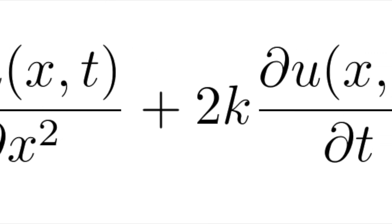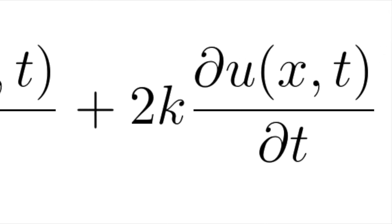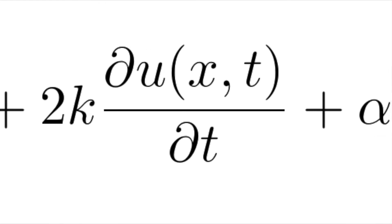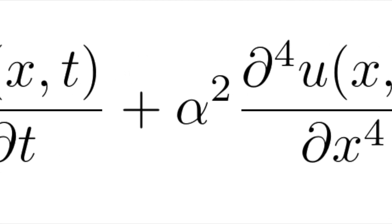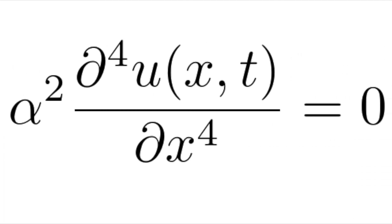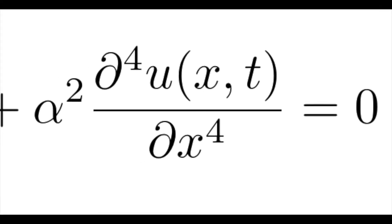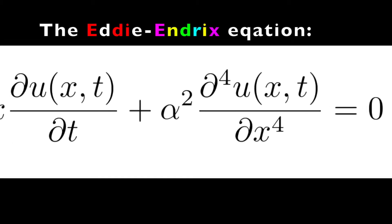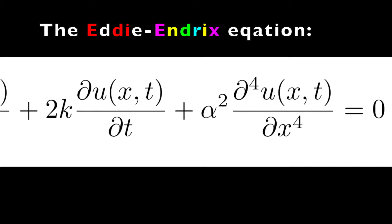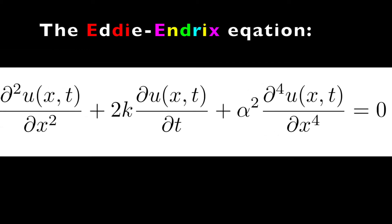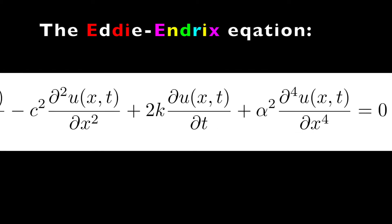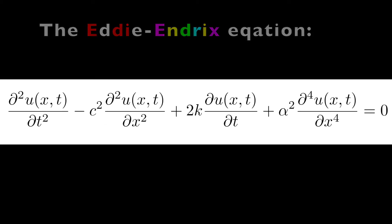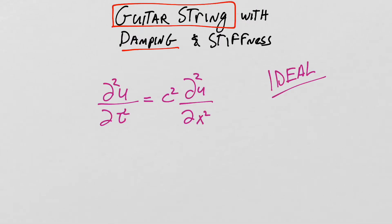For longer damping times, k is smaller; for shorter damping times, k is larger. The bigger the value of k, the stronger the damping. Now we add a new term to the wave equation — a term that captures the fact that forces internal to the guitar string will tend to make it straighten out. This is the form of the wave equation that Jimi Hendrix and Eddie Van Halen probably used to create all of their riffs and solos. This equation is not typically addressed in the literature of mathematical physics, so we will call it the Eddie Hendrix Equation.